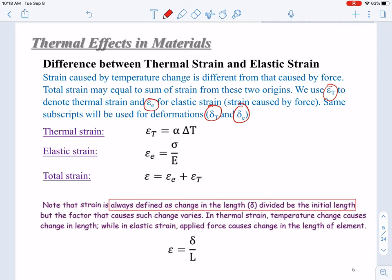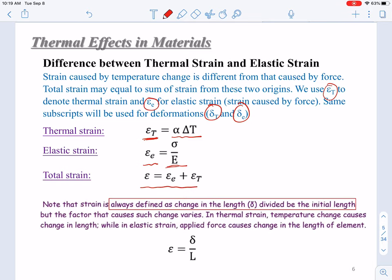Now let's summarize these equations. Thermal strain can be calculated from α times ∆T and elastic strain εE can be calculated from Hooke's law. It is stress over E, stress over modulus of elasticity. The total strain can thus be calculated by adding these two terms.